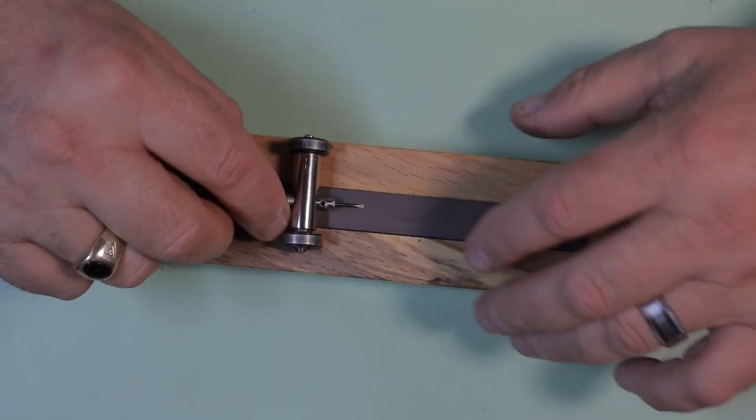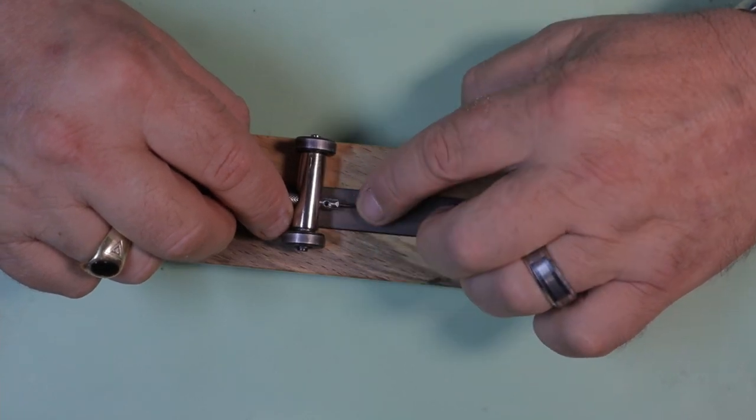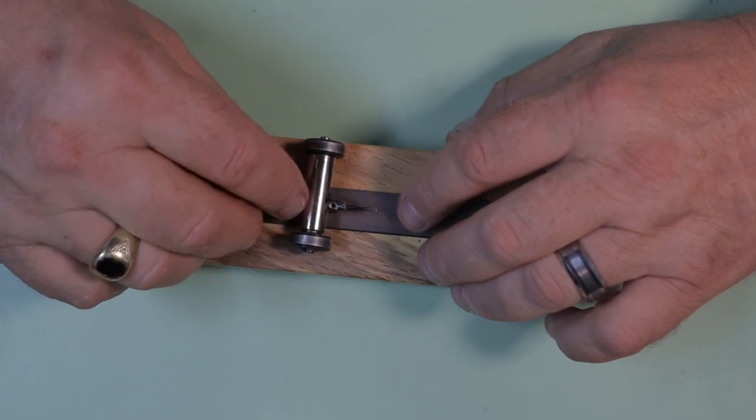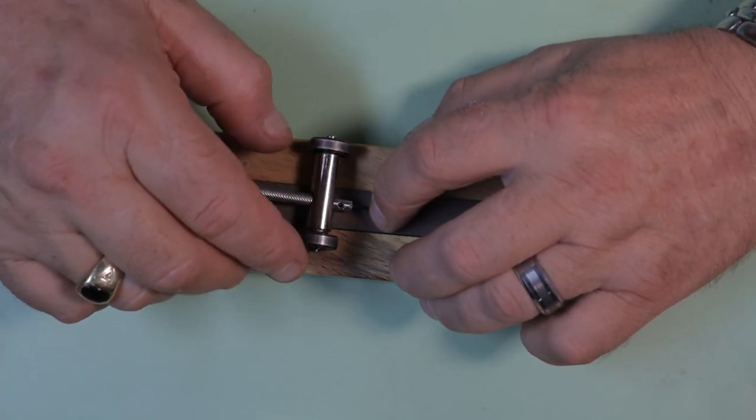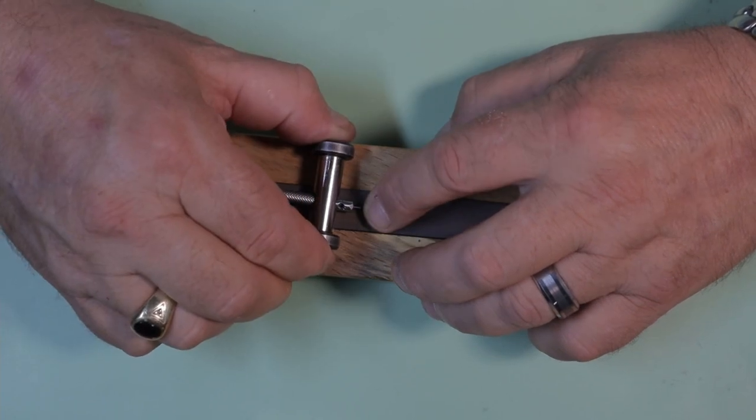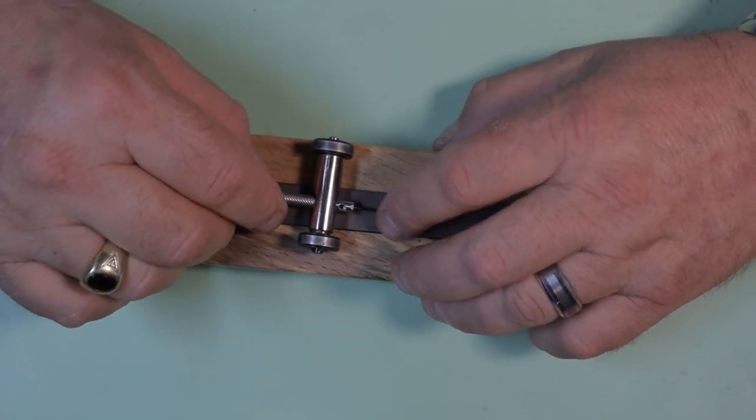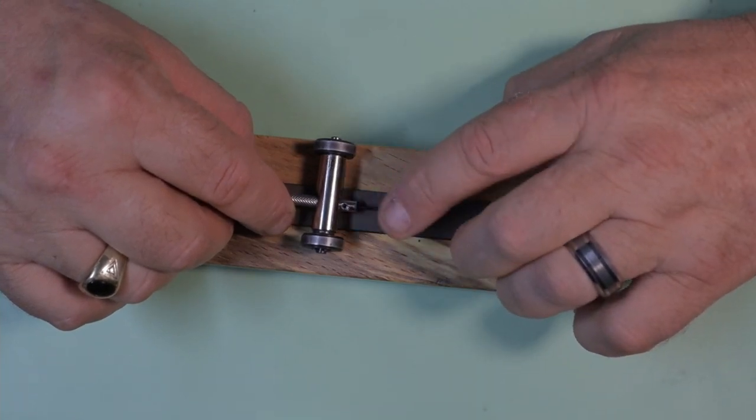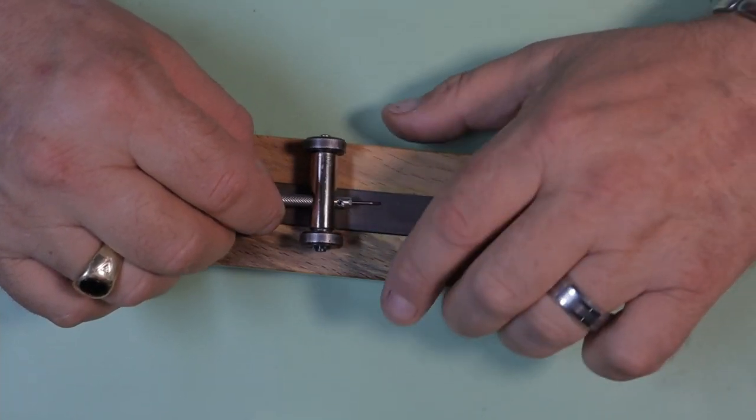Now with the screwdriver mounted in the holder the first thing we need to do is get the flat side of the blade down flat to the sharpening stone. So I found the easiest way to do this is just by squeezing in on the jig and then pushing down on the blade with my fingernail and that gets it flat.